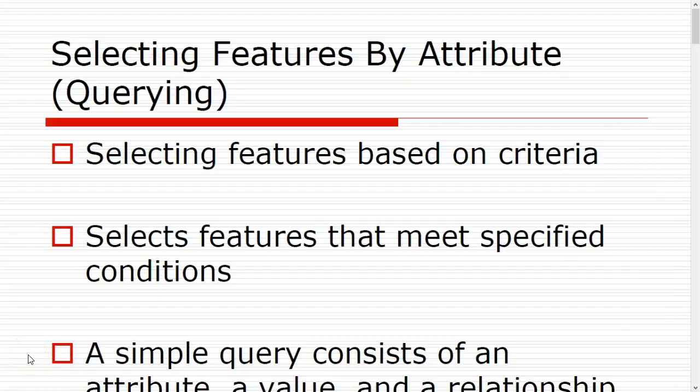This video is going to talk about how we can ask our data questions and get fast, meaningful results back. The first way we're going to learn about how we can ask our data questions is by selecting features by attributes.